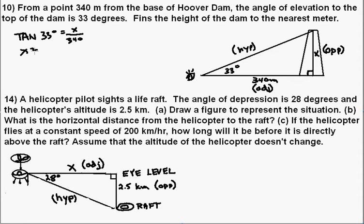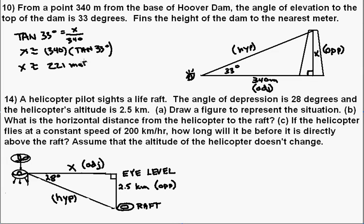So x is going to be approximately equal to 340 times tangent 33 degrees. If we type that in, we get x is approximately 221 meters to the nearest meter. All right, that's number 10.